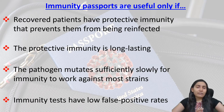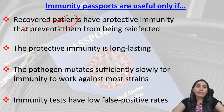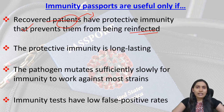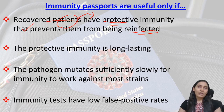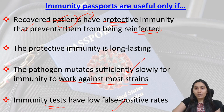Immunity passports are useful only if recovered patients have protective immunity that prevents them from being reinfected. Even if a person has recovered from a particular disease, if that person has protective immunity, the disease will not affect them again. Additionally, the protective immunity must be long-lasting, the pathogen must mutate sufficiently slowly for immunity to work against most strains, and immunity tests must have low false positive rates.